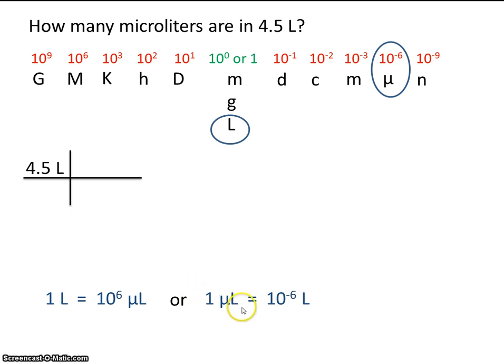1 microliter is really, really small. So that would be equal to only a millionth of a liter. So that does make sense. 1 millionth of 1 liter is equal to 1 microliter. And a million microliters is equal to 1 liter. So make sure that your conversion factors are equivalent quantities. 1 liter equals a million microliters, or 1 microliter equals a millionth of a liter.